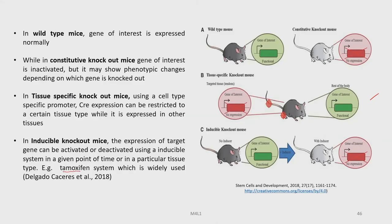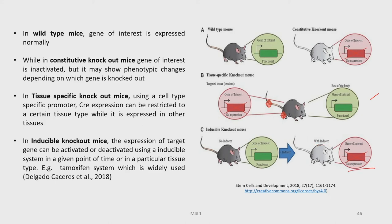There is another type called inducible knockout mice. Here, the expression of the target gene can be activated or deactivated externally by using an inducible system at a given point in time or in a particular tissue. For example, the tamoxifen system is widely used to switch on and off particular genes. In the absence of the inducer the gene is functional, but in the presence of the inducer the gene becomes non-functional.